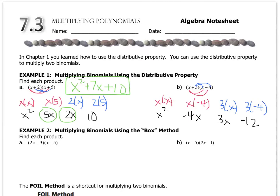Finally, I have to combine whatever I can. Negative 4x combines with 3x. And so my final answer is x squared minus x minus 12. You will typically get terms that combine at the end, so you always want to look for that.